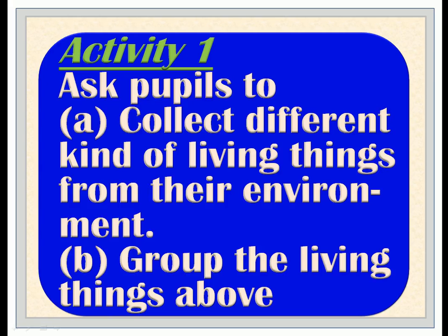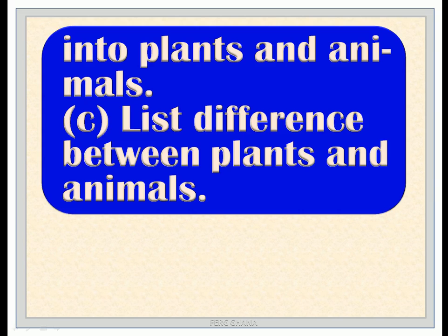Activity 1. Ask pupils to: a, collect different kinds of living things from their environment; b, group the living things above into plants and animals; c, list differences between plants and animals.